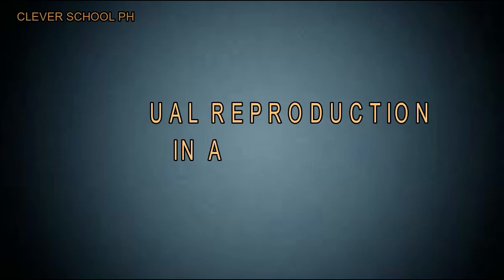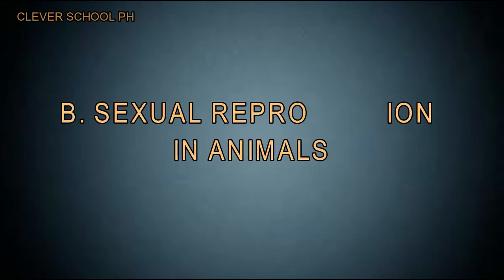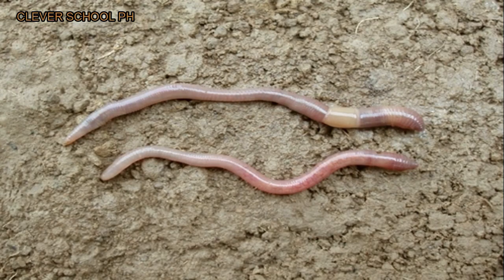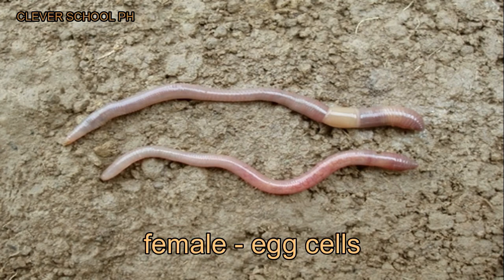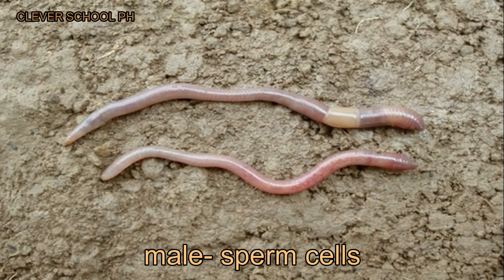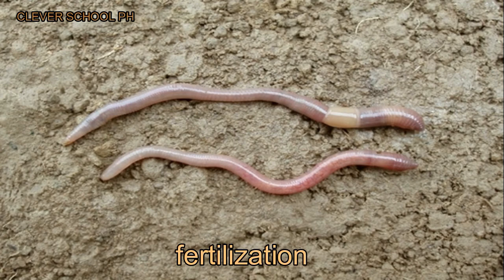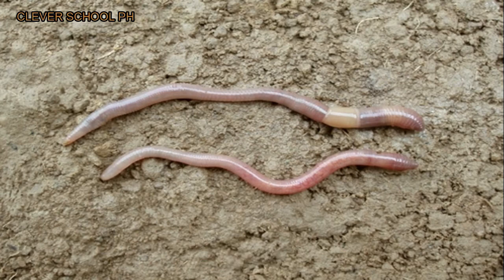In sexual reproduction, two parent organisms are involved — the male and the female. The female parent produces egg cells and the male parent produces sperm cells. When the egg cell unites with the sperm cell, the process called fertilization happens and the new cell formed is called a zygote. The zygote develops and grows into a new animal, meaning that a baby animal carries the characteristics of both parents.